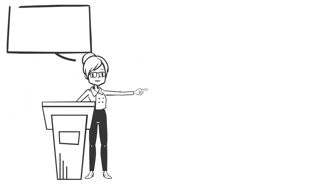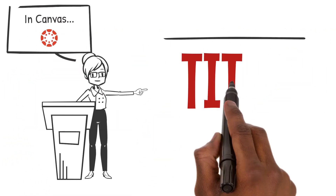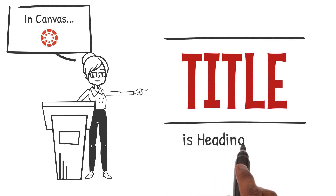In Canvas, the page title is always Heading Level 1, which means when you create a heading level in the Rich Content Editor, you always start with Heading Level 2.